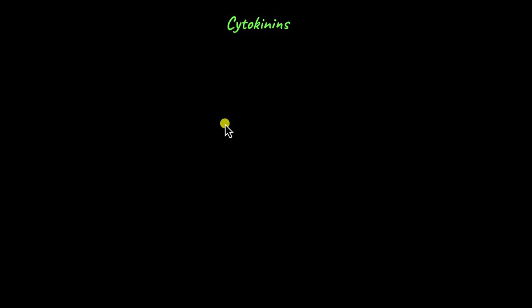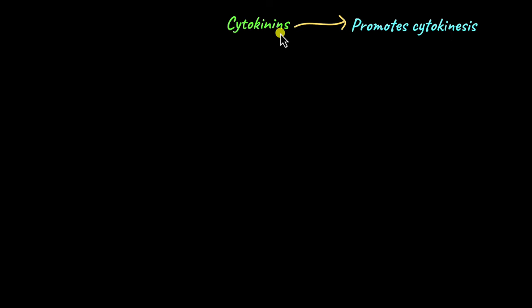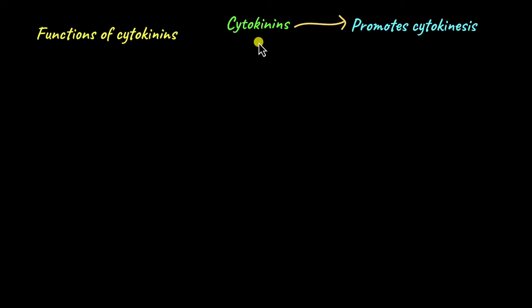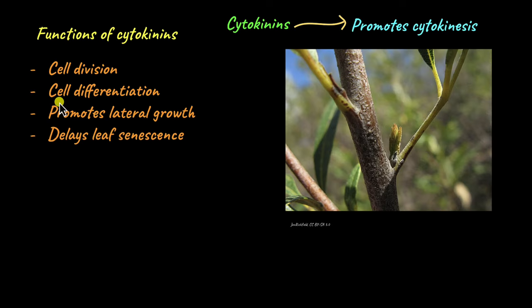Next we will move on to cytokinins. The word cytokinin is derived from the term cytokinesis, which is what cytokinin does — it promotes cytokinesis. Cytokinesis is the actual process of cell division where the cytoplasm divides. So from this you can guess that cytokinins are involved in promoting cell division. Not just cell division, cytokinins are also involved in cell differentiation — when the meristematic cell develops and differentiates into a permanent mature cell.